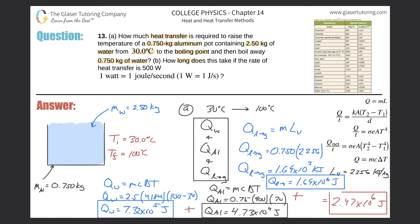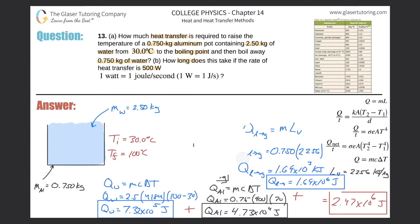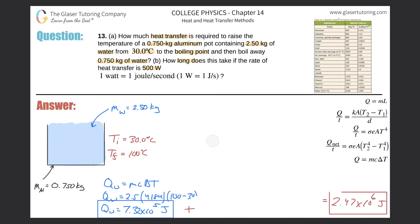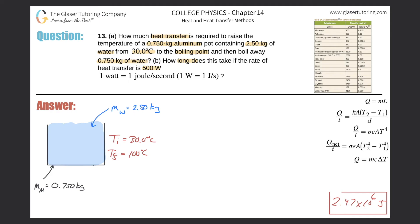Part B asks: how long does it take if the rate of heat transfer is 500 watts? Watts is power — joules per second. Recall the power formula: P = Q / t. Solving for time gives t = Q / P. The total heat energy we just calculated is 2.47 times 10 to the sixth joules, divided by 500 watts.